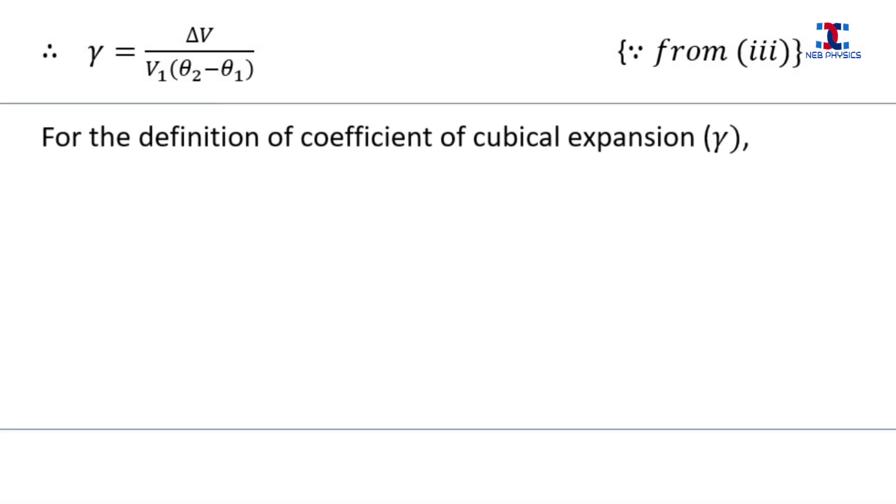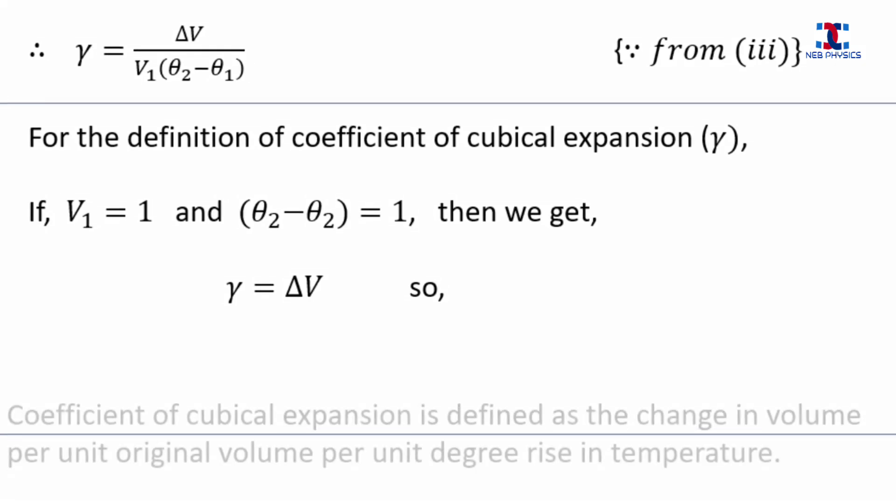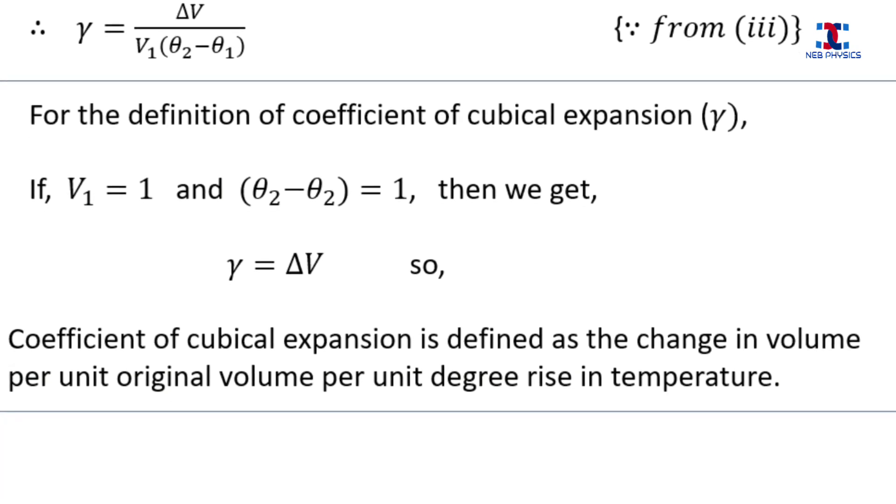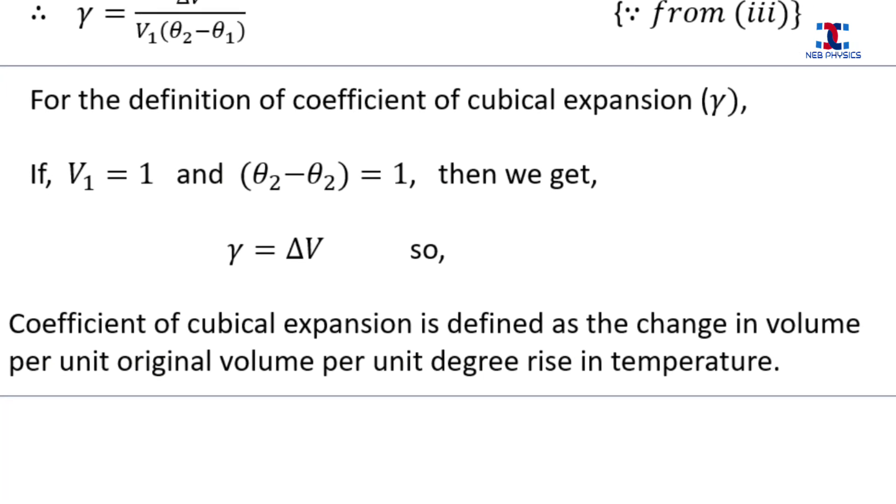Now, for the definition of the coefficient of cubical expansion, we do the following approximation. We approximate the original volume of the cube to unity, and also the difference in temperature to unity. And by doing this we get Gamma is equal to Delta V. So we can define Gamma as the change in volume per unit original volume per unit degree rise in temperature.